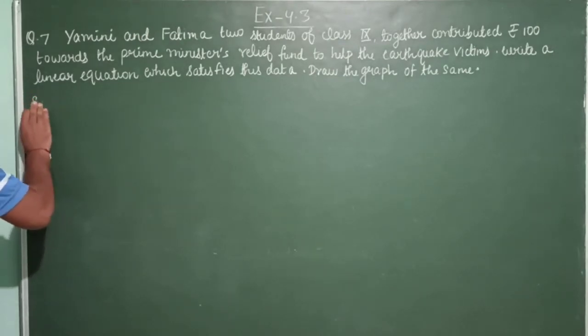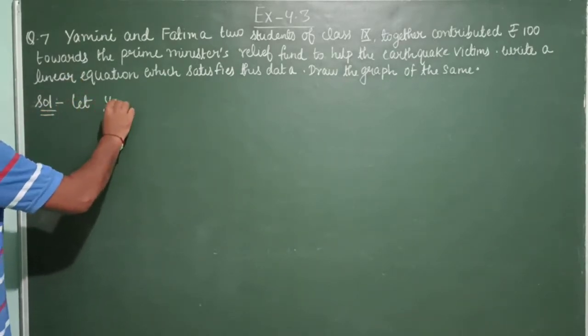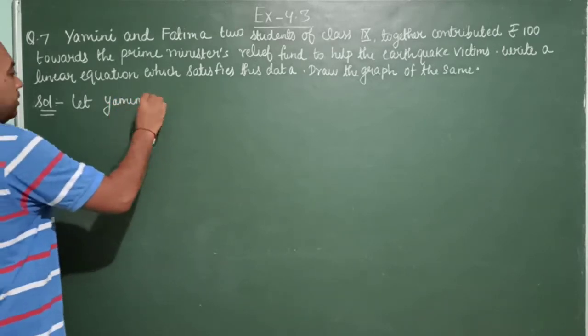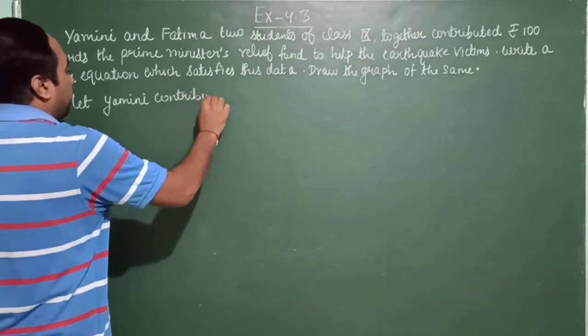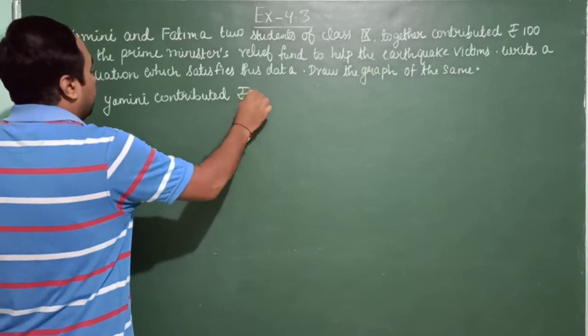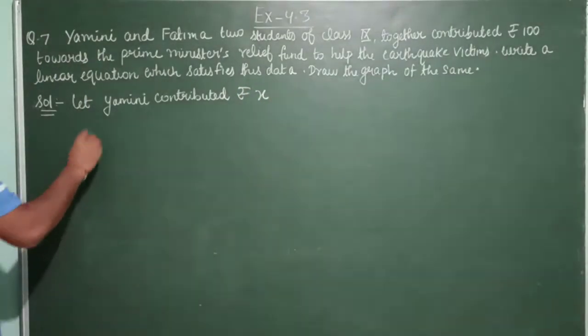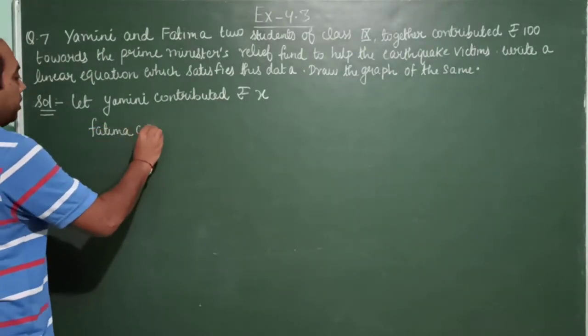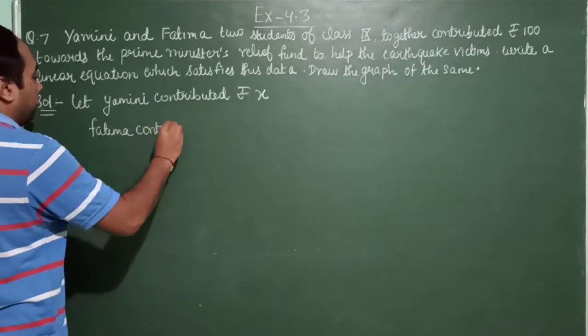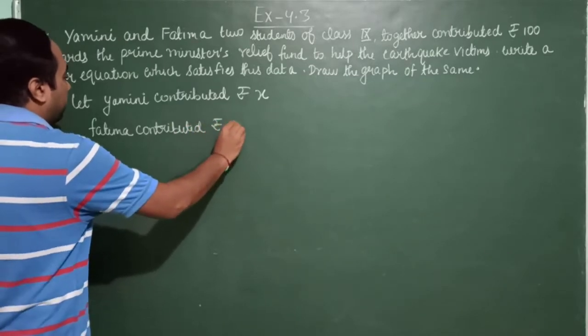So first I am writing solution. Now we can assume that let Yamini contributed rupees x, and Fatima contributed rupees y.